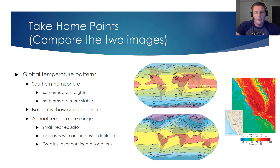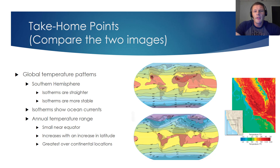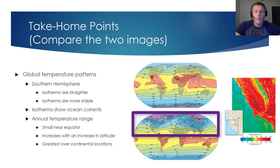Now let's put both maps on the screen at the same time and talk about our take-home points for this vodcast. When we compare and contrast the Northern Hemisphere and the Southern Hemisphere, it's very important that you understand that the Southern Hemisphere has relatively straight isotherms. That's due to the fact that the majority of the surface in the Southern Hemisphere is ocean. Knowing that there's very unequal heating between land and water, and knowing that most of the land mass on our planet occurs in the Northern Hemisphere, the isotherms will tend to get a little bit squiggly in the Northern Hemisphere.